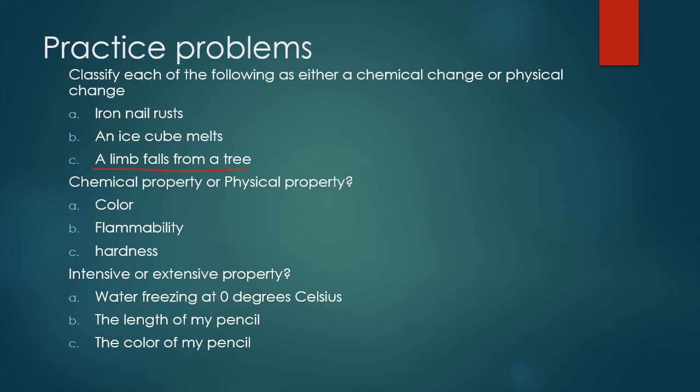Now let's classify properties. Color is a physical property — you can observe it without changing the chemical composition. Flammability is a chemical property — you have to set it on fire to test it, thereby changing the composition. Hardness is a physical property — squishing play-doh around doesn't chemically alter it; after manipulation it's still play-doh, just physically changed.